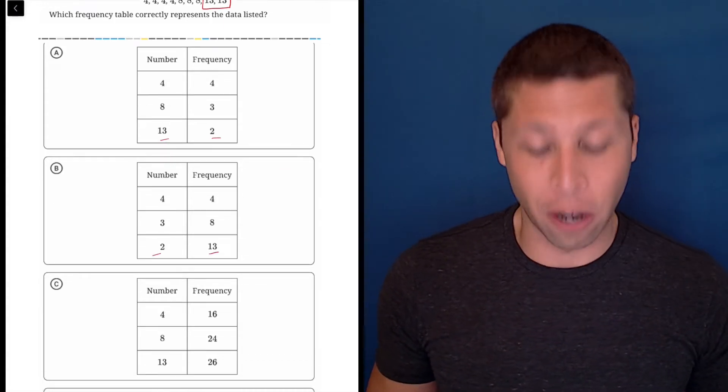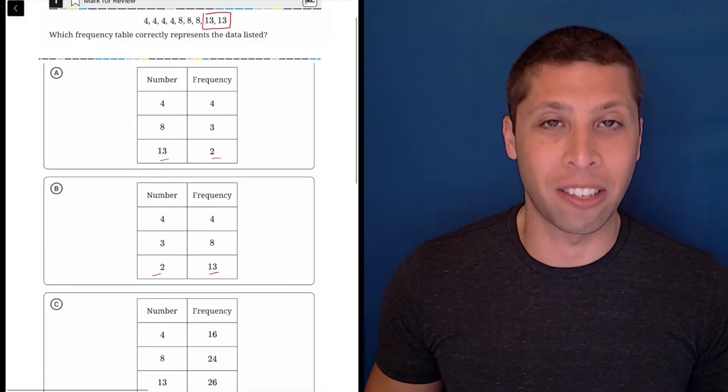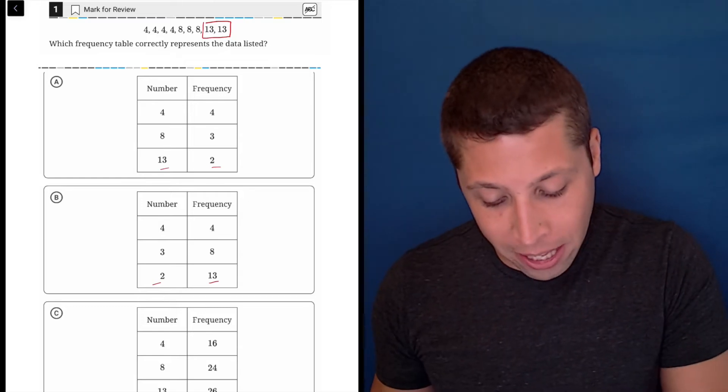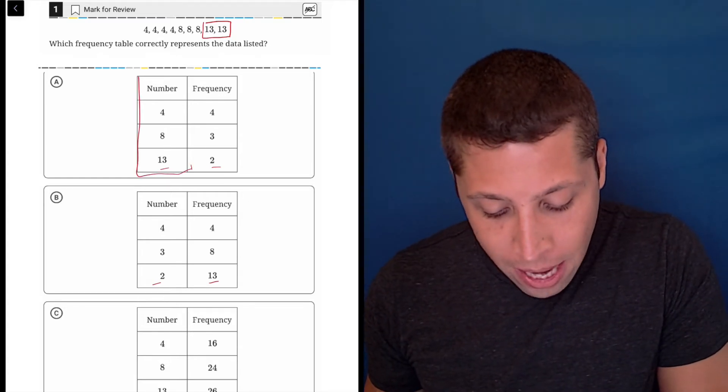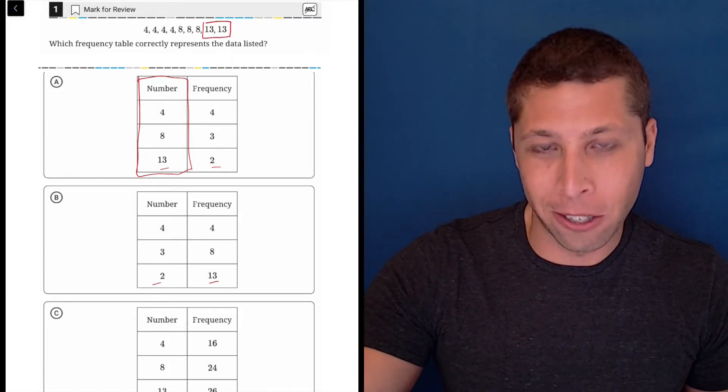Now notice how choice B does it though. They flip those same two numbers. They say the number two and the frequency is 13, but no, be careful. The data that we are given is going to be here in this left column. And then in the right hand column is how often each of those data points appears.